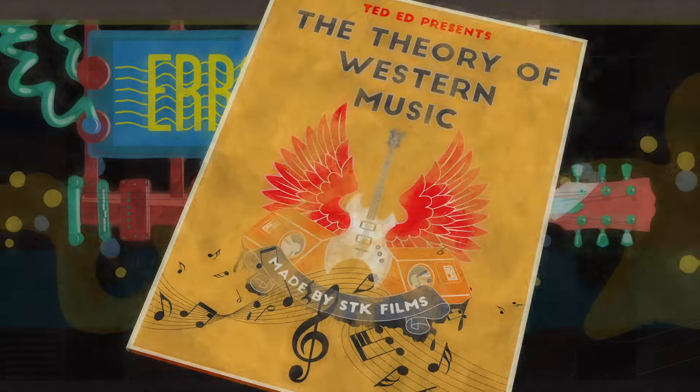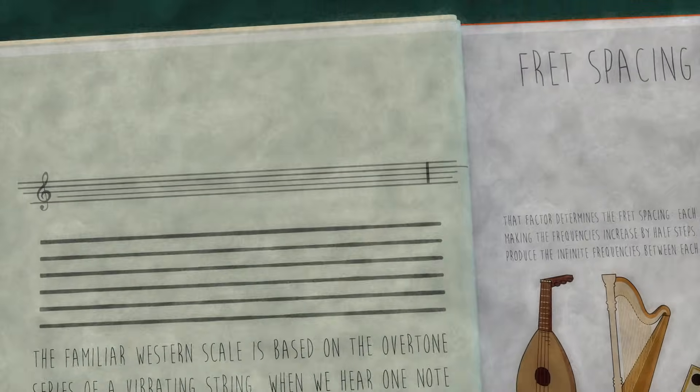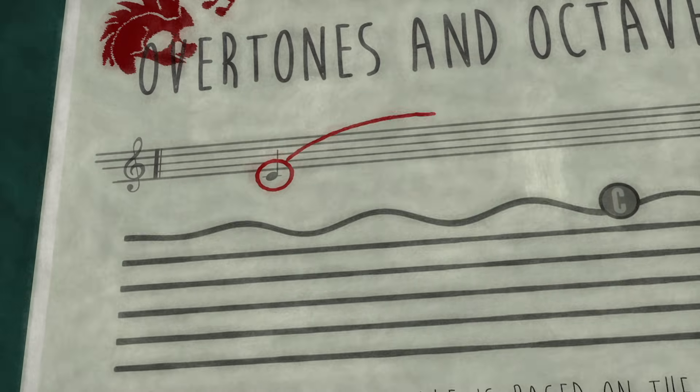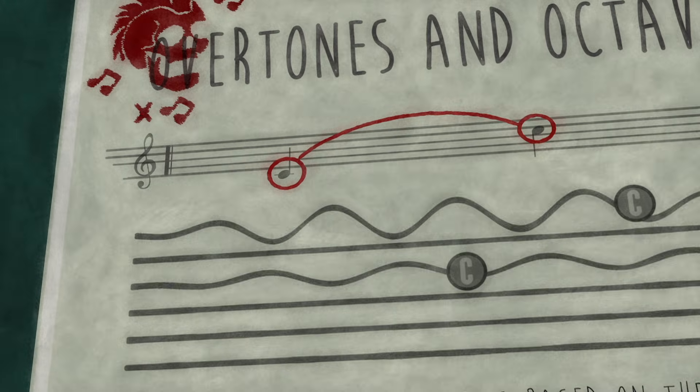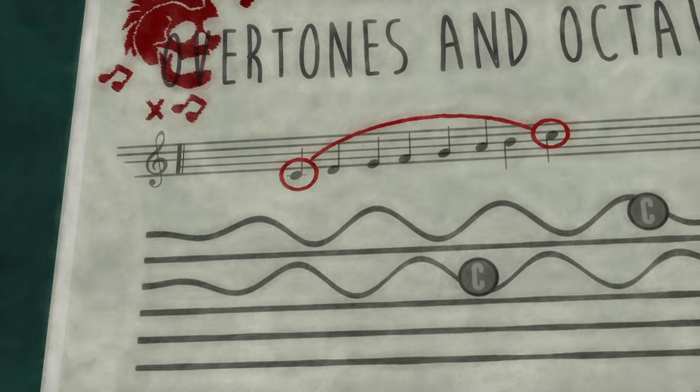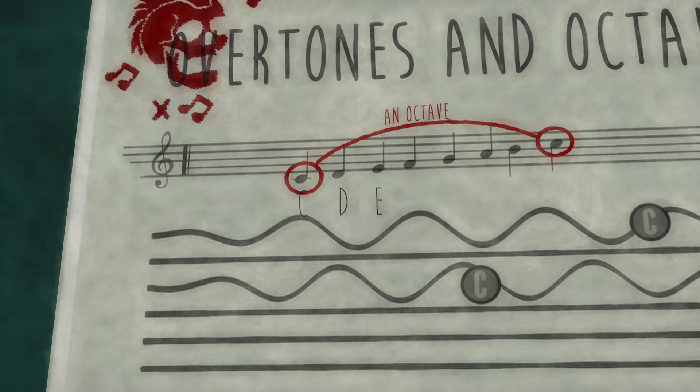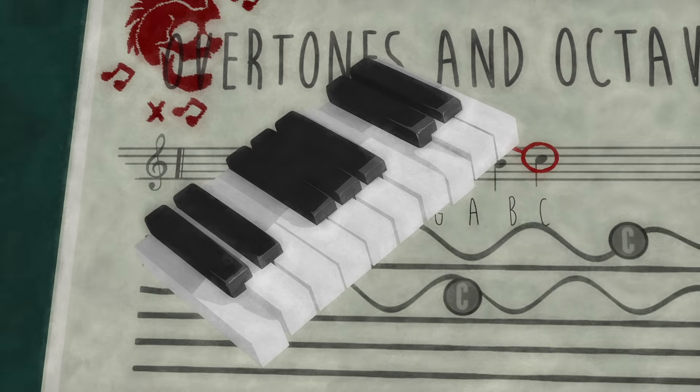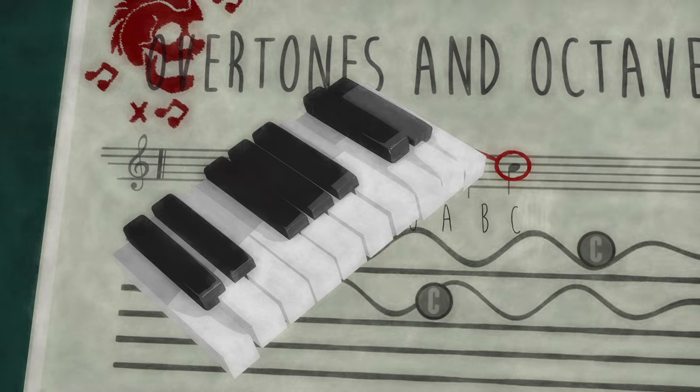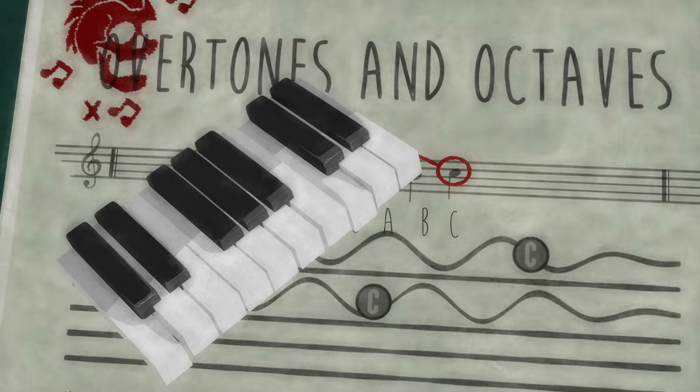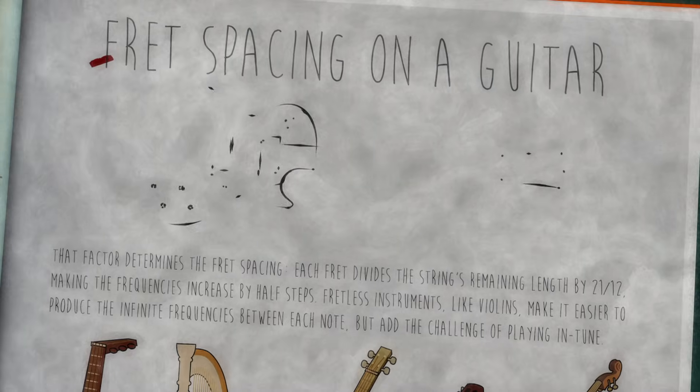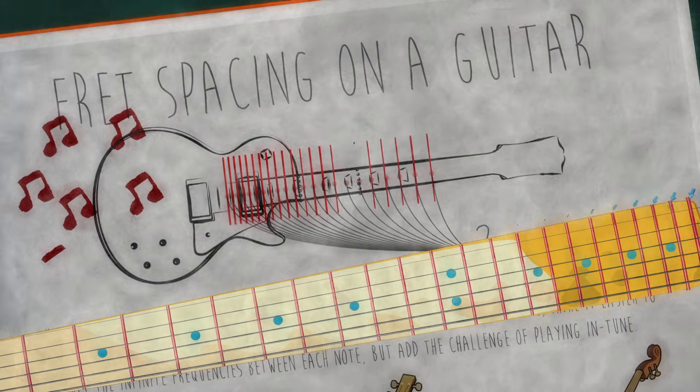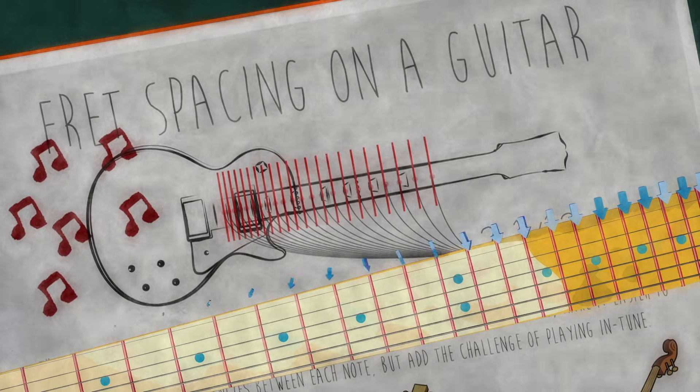The familiar Western scale is based on the overtone series of a vibrating string. When we hear one note played with another that has exactly twice its frequency, its first overtone, they sound so harmonious that we assign them the same letter and define the difference between them as an octave. The rest of the scale is squeezed into that octave, divided into 12 half-steps, whose frequency is each 2 to the 1/12th power higher than the one before it. That factor determines the fret spacing.